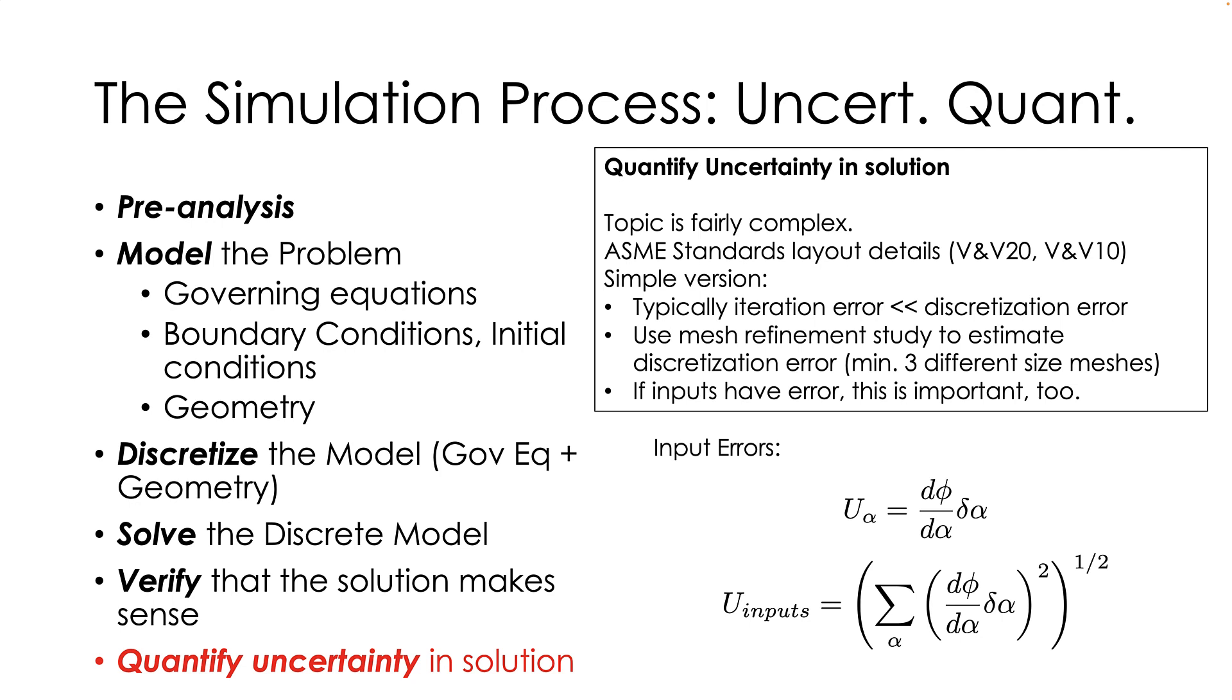Then, you have to add that up for all of the different inputs in your model, if there are more than one that have uncertainty in them. Typically, you assume that they're uncorrelated, so that after you can add up the squares and then take the square root to get the total amount of input error in the system. And so, that amount of error is in addition to any mesh refinement error that you have or discretization error. So, that more or less is what's involved in uncertainty quantification.